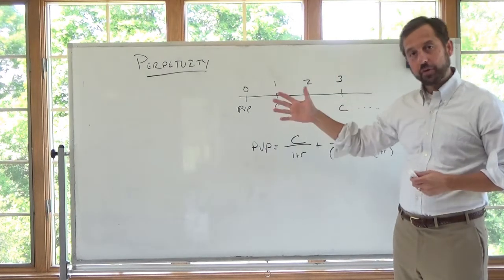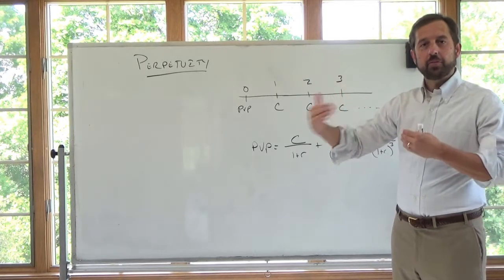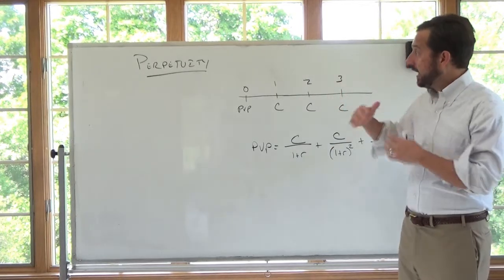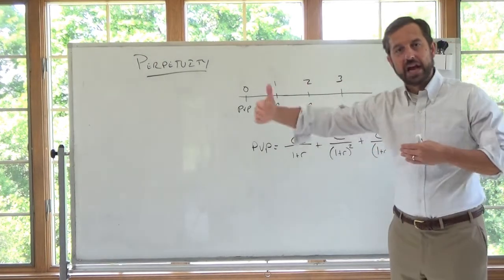Okay, here we're going to talk about a perpetuity. So we're starting time-valued money with multiple cash flows. The idea here is we're going to talk about particular contracts which have many cash flows.